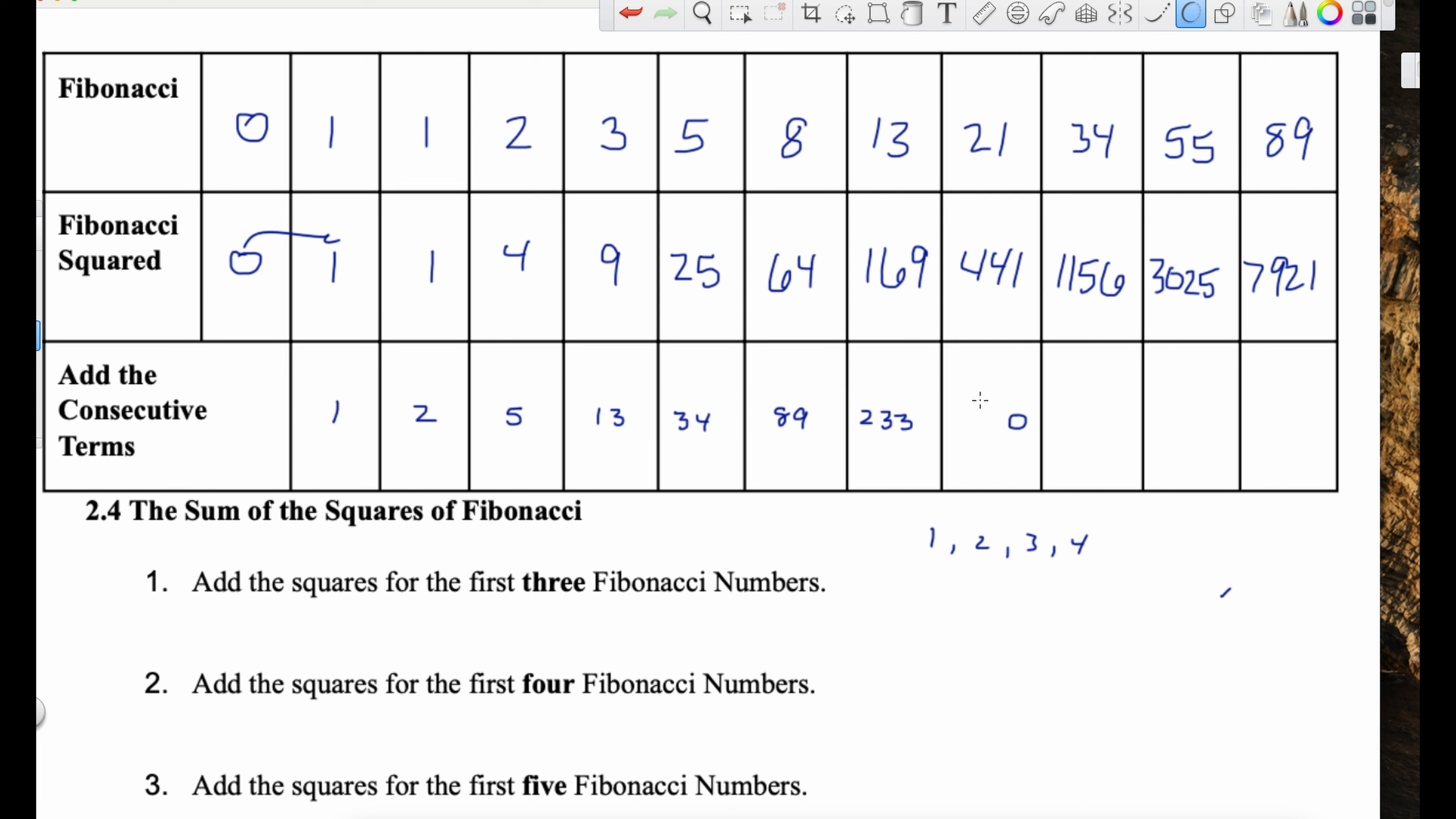1 and 1 is 2. We've got 1 and 4 is 5. 4 and 9 is 13. 9 and 25 is 34. And then we've got 89.